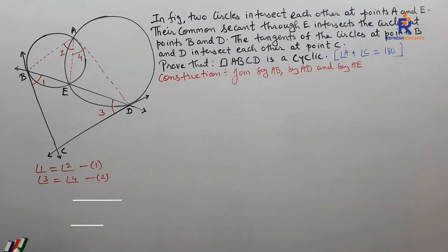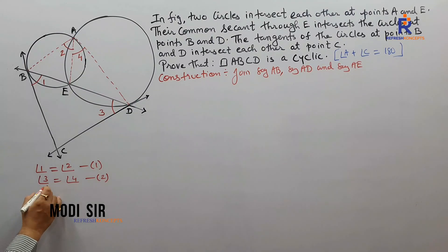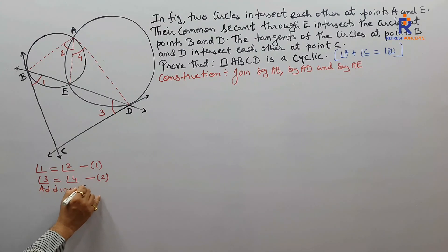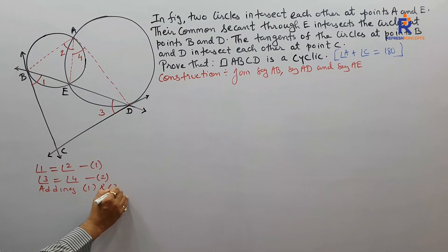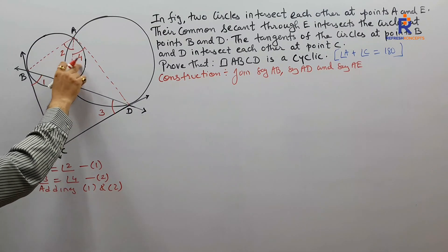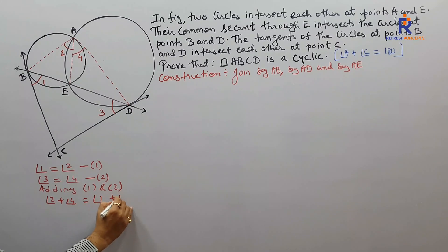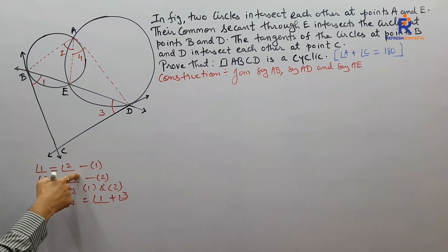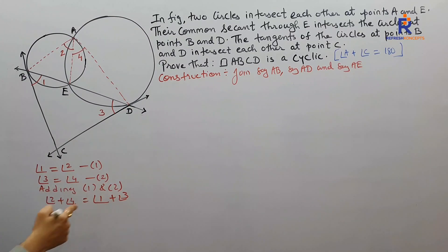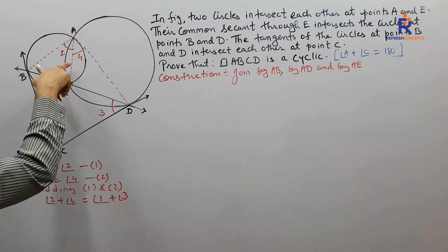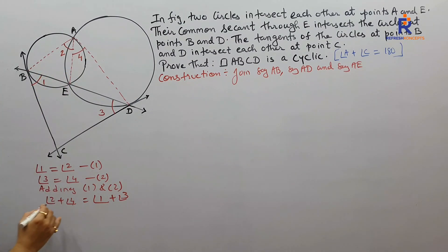That tells me I shall go for adding equation 1 and 2. What if I add 1 and 2 — what will I get? Angle 2 plus angle 4 equals angle 1 plus angle 3, that means I have added the RHS. I simultaneously have to add the LHS also. When I add angle 2 plus angle 4 I shall get angle A — angle addition property.